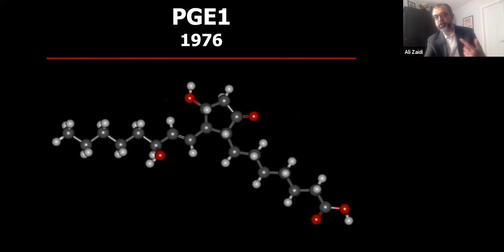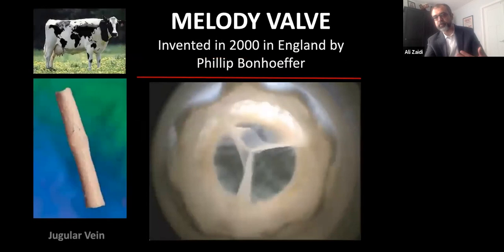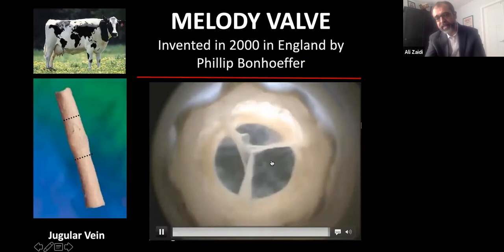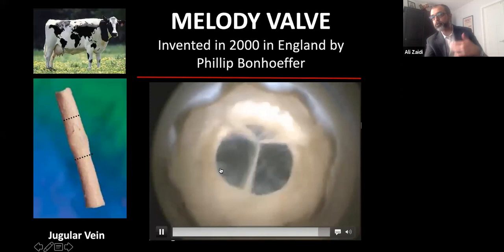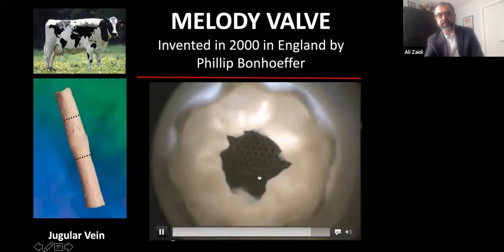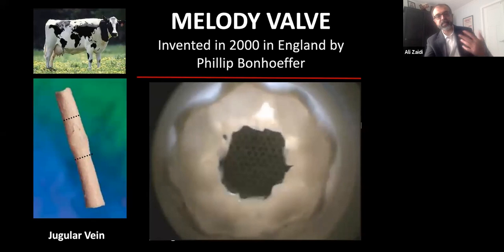In the late 1970s came prostaglandins — for the first time we're talking about medicines. Prostaglandins keep the patent ductus arteriosus open, so in cyanotic or blue babies we could now use medicines instead of surgery or catheterizations to palliate. Jumping about 20 years to London and initially Paris, Philip Bonhoeffer developed a transcatheter valve — the melody valve, taken from the jugular vein of a cow. He created a prosthetic valve that could be delivered through a catheter for transcatheter valve placement — first done in the early 2000s.